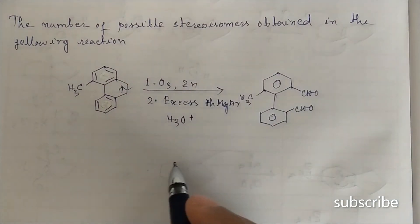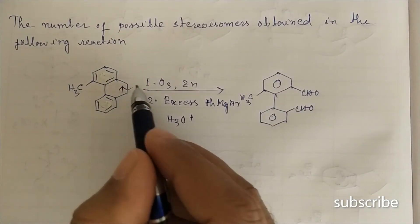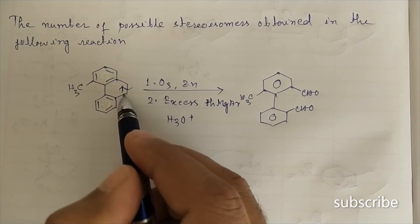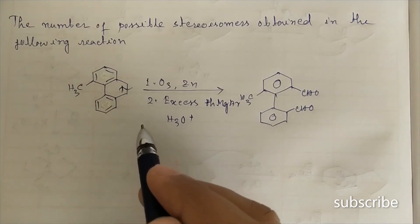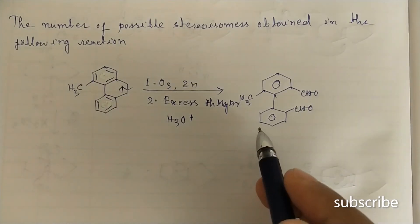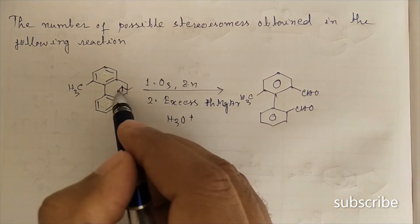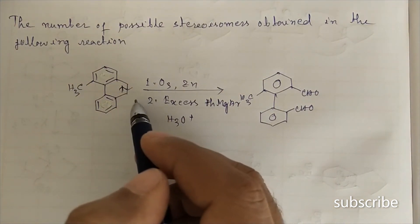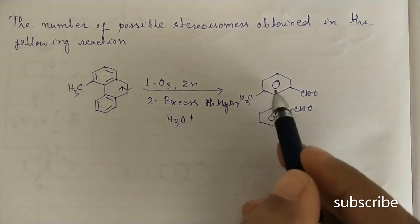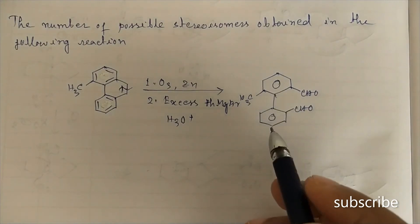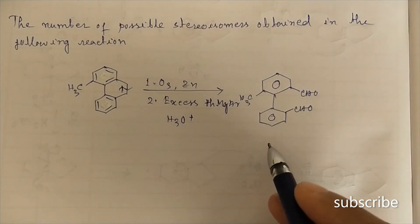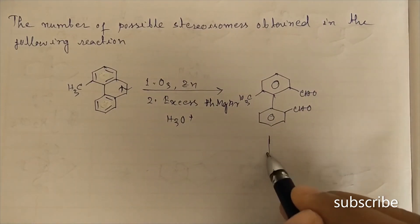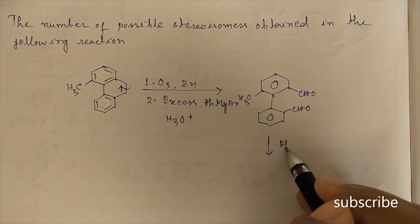Ozonolysis takes place only at this double bond because the loss of resonance energy will be minimum if only this double bond is oxidized — the resonance energy of the remaining two rings stays intact. Now if treated with excess PhMgBr...